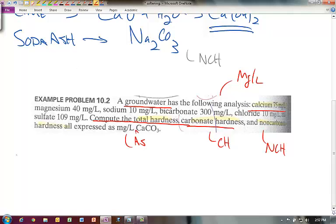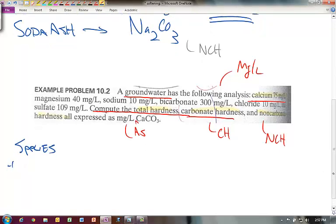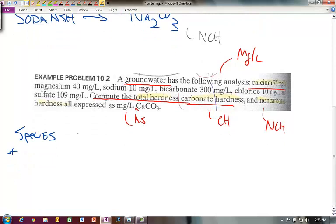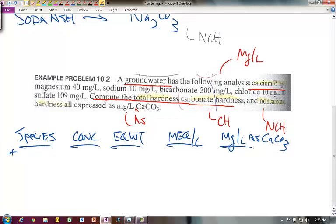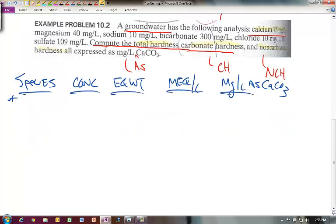We want to set up a table similar to that example problem in the textbook. We'll have the species, concentration in milligrams per liter, equivalent weight, milliequivalents per liter, and then milligrams per liter as CaCO₃. We'll put the cations up here and anions down at the bottom.